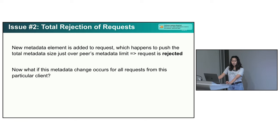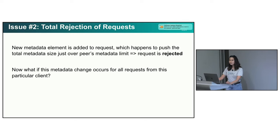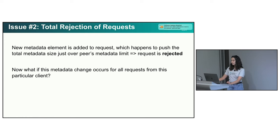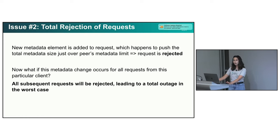The second issue was a much larger one. This team was experiencing a full outage where all of a sudden all of their requests were being rejected. It turns out a new metadata element had just been added that was only a few bytes, but it happened to take their total metadata size just over the peer's limit. The problem was that they added this element to all requests, so all subsequent requests were now rejected, leading to a total outage. This can also happen if you increase the value of an existing element by just a few bytes and hit this cliff.